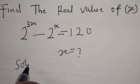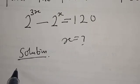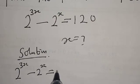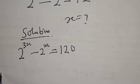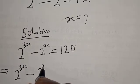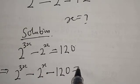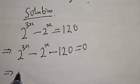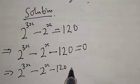We have 2 raised to power 3x minus 2 raised to power x is equal to 120. This implies that we have 2 raised to power 3x minus 2 raised to power x plus 120 on the other side — calling minus 120 — is equal to 0. So we have 2 raised to power 3x minus 2 raised to power x minus 120 is equal to 0.